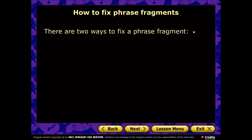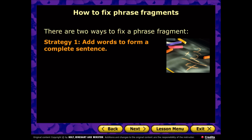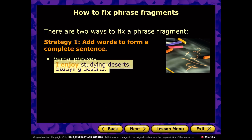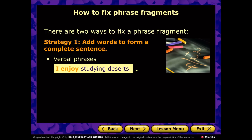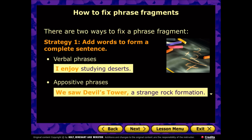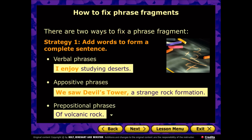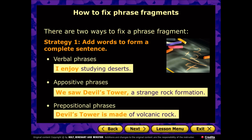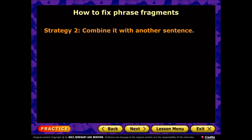Those are the three types of phrases often mistaken as complete thoughts: verbal phrases, appositive phrases, and prepositional phrases. There are two ways to fix these phrase fragments. First, add words to form a complete sentence. For 'studying deserts,' add 'I enjoy' — giving us 'I enjoy studying deserts.' For the appositive 'a strange rock formation,' say 'Devil's Tower, a strange rock formation' — it renames Devil's Tower. For 'of volcanic rock,' say 'Devil's Tower is made of volcanic rock.'